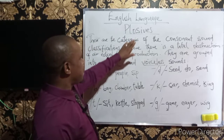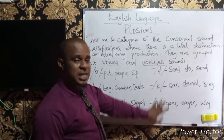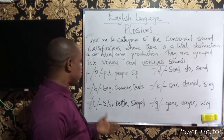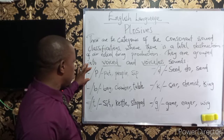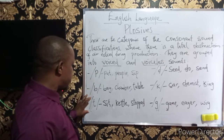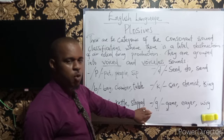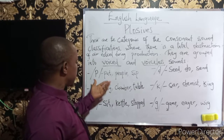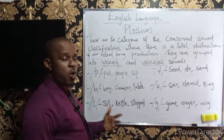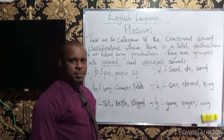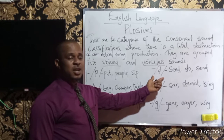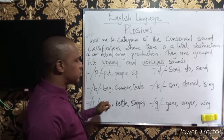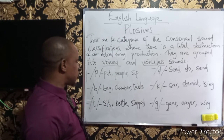The plosives are six in number and they have their phonetic representation. If you look at what we have on the board, we have six sounds written in their different phonetic symbols. Someone can be confused looking at them as alphabets, but they are not alphabets — they are phonetic symbols of the plosives under the consonant sounds.